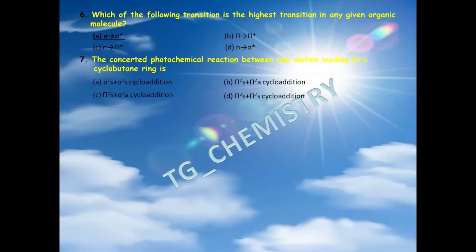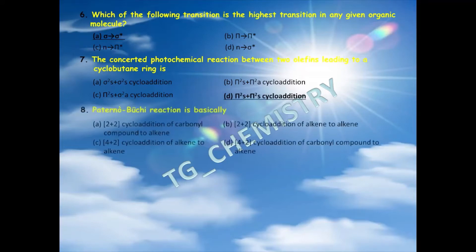Sixth question: the concerted photochemical reaction between two olefins leading to a cyclobutane ring is — options are: A) σ2s + σ2s cycloaddition, B) π2s + π2a cycloaddition, C) π2s + σ2a cycloaddition, D) π2s + π2s cycloaddition. Since two olefins form a cyclobutane ring, the answer is option D — π2s + π2s cycloaddition.